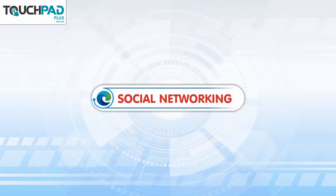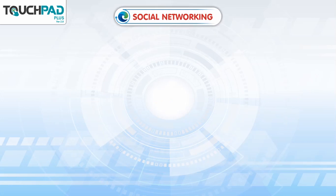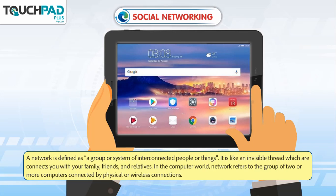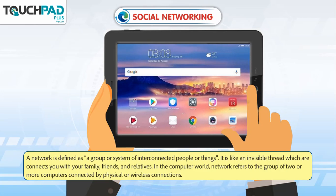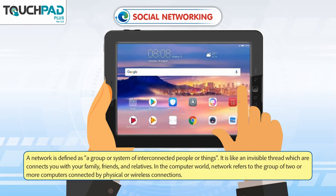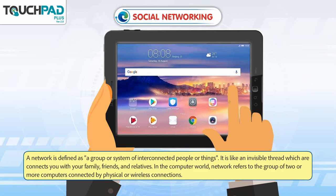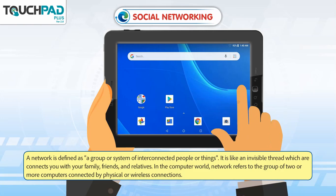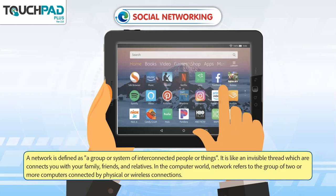Social Networking. A network is defined as a group or system of interconnected people or things. It is like an invisible thread which connects you with your family, friends and relatives.